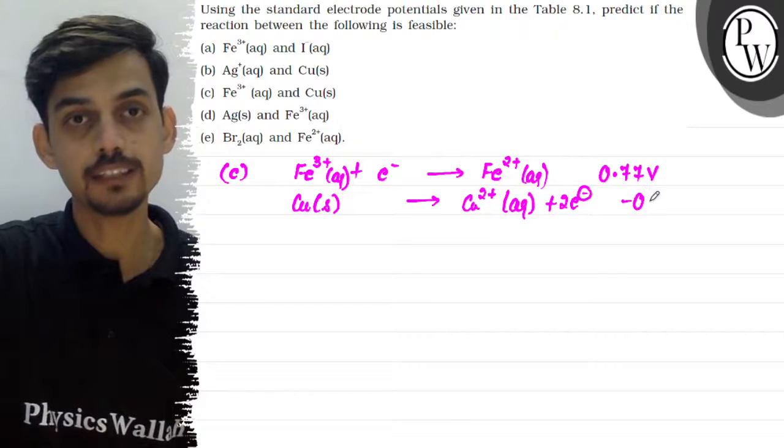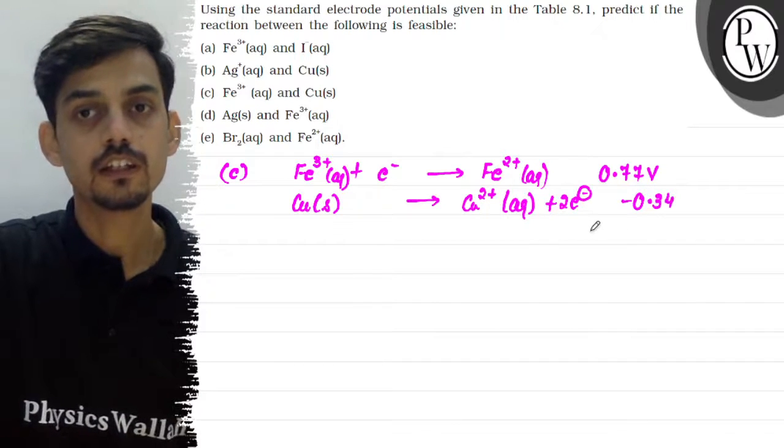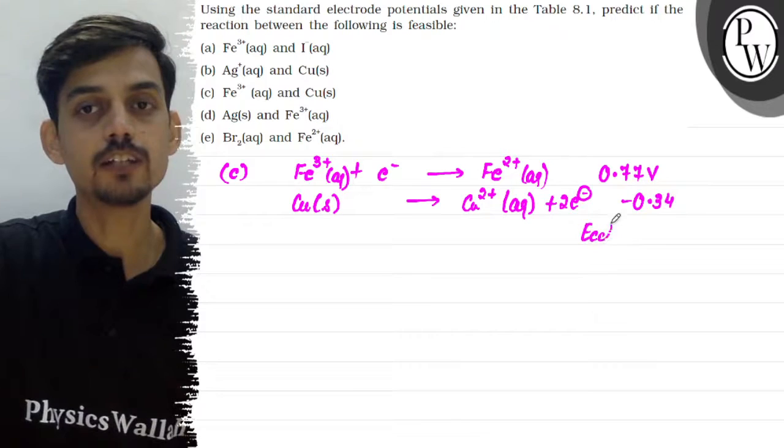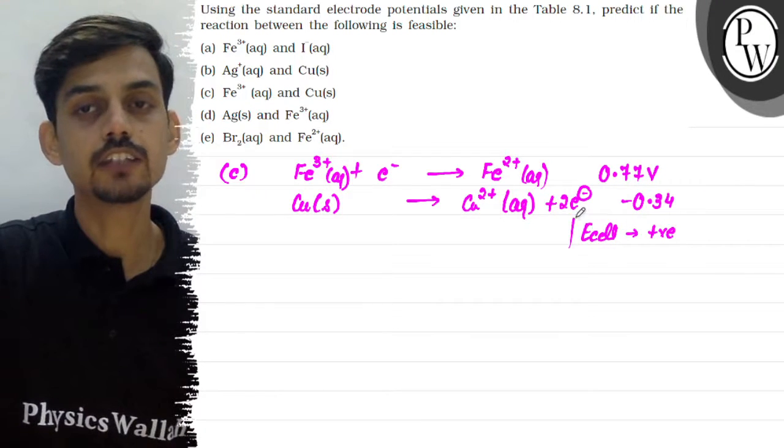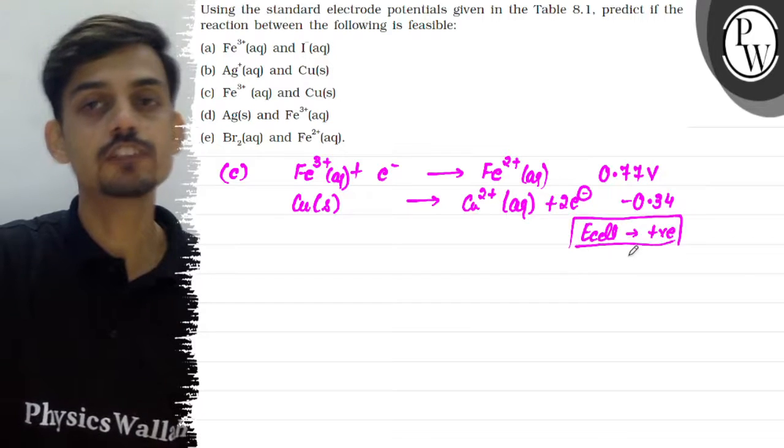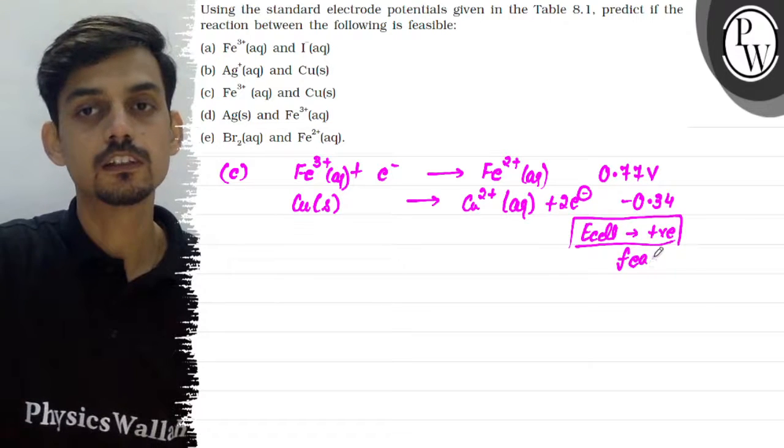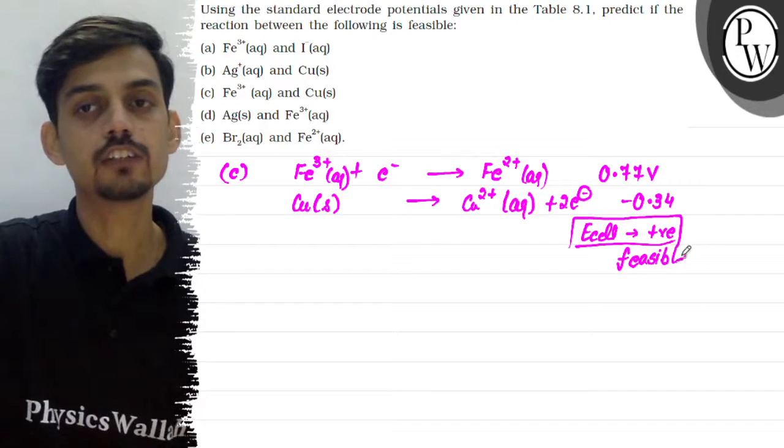And its reduction potential is 0.34 hai. So oxidation potential will be minus 0.34. Inka bhi summation again positive hai. So that's why the reaction between these two pairs will also be feasible. The third pair reaction is also feasible.